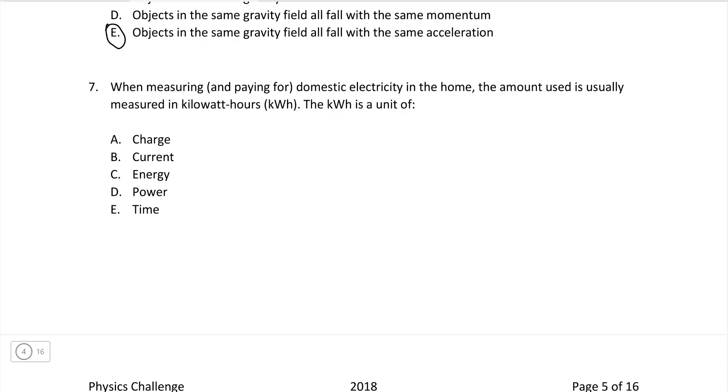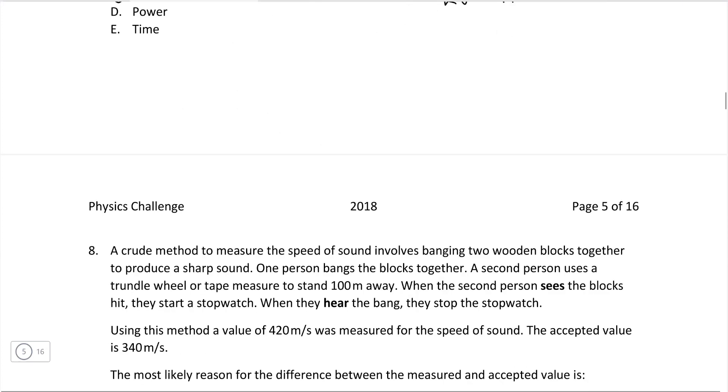Question 7. When measuring and paying for domestic electricity, the amount used is usually measured in kilowatt hours. The kilowatt hour is a unit of energy. If you're wondering why, remember that power is defined as the amount of energy divided by the amount of time. And what we can do is rearrange for the energy, which is power times time. So power is measured in kilowatts and time is measured in hours. Therefore, the kilowatt hour is the unit of energy.